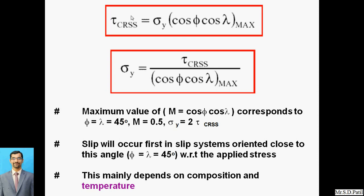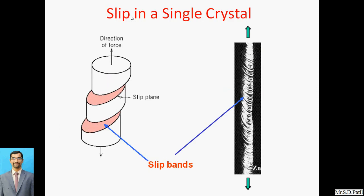When phi is less than 45 degrees, the concept is called geometrical hardening. This mainly depends on composition and temperature. We can see how the single crystal structure gets disturbed. These are the slip planes shown here, and basically the direction of forces and the slip plane are resolved into two components: one towards the slip direction and the other normal to the surface, which are considered as the shear part.